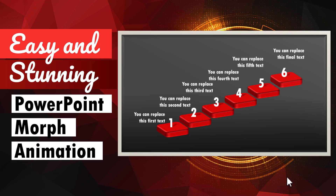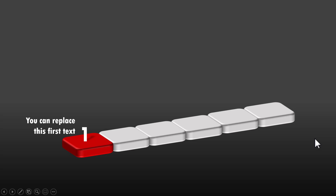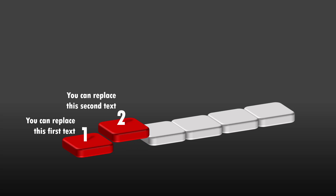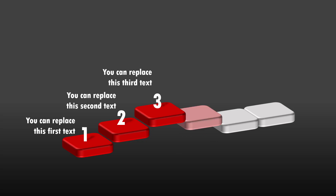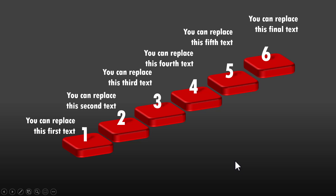The beautiful PowerPoint morph animation you will learn to create today looks like this. First we show six blocks, then on a click we show the first step in the process. Once we finish talking about the first step, we click to show the second step, then the third, fourth, fifth, and final one. Isn't this a beautiful graphic? You can use this to show steps in a process, different levels of growth, a timeline, etc. It's a highly versatile graphic and I'll show you how to create this from scratch — so simple that even a beginner can do it without any trouble.